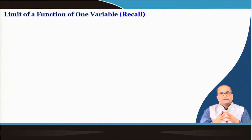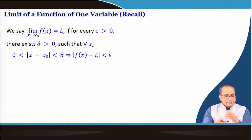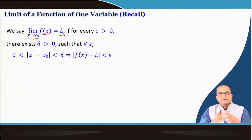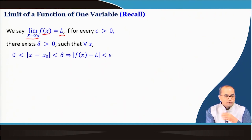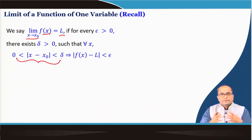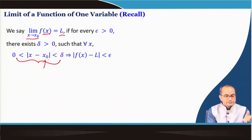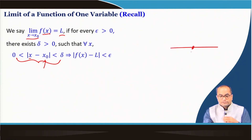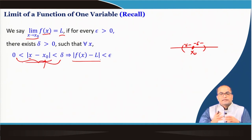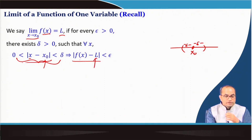Coming to the limit of a function of one variable — just to recall, because this concept will be extended for functions of two variables. We say that the limit of f as x approaches x₀ is L if for every epsilon > 0 there exists a delta > 0 such that for all x in the delta-neighborhood of x₀ (excluding x₀ itself), the difference |f(x) − L| < epsilon.